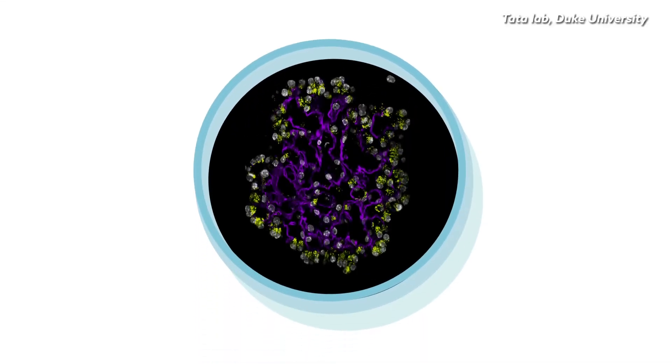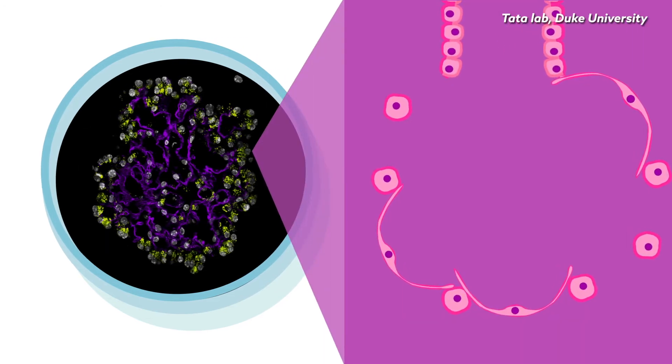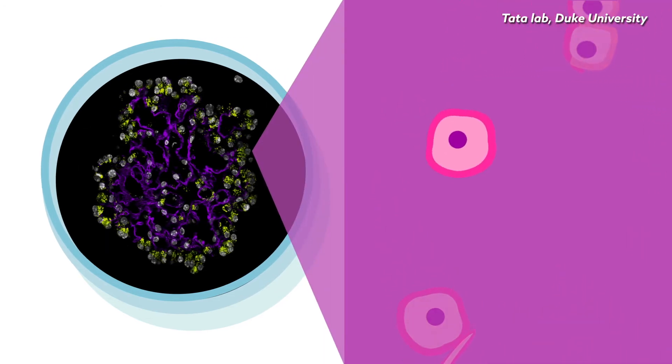To study this problem, the Tata Lab in Cell Biology at Duke University has created many lungs inside petri dishes. They found that inside these organoids, the blocky stem cells enter an intermediate state on their way to generating the thin AT1 cells.